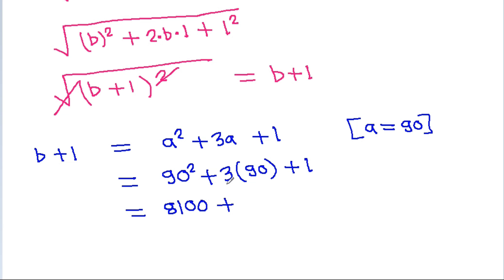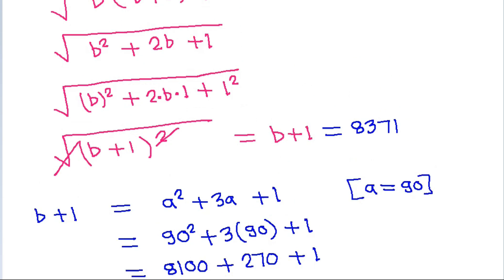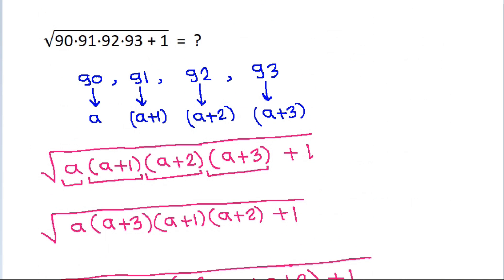Substituting a equals 90, we get 90 squared plus 3 times 90 plus 1, which equals 8371. So the answer is 8371.